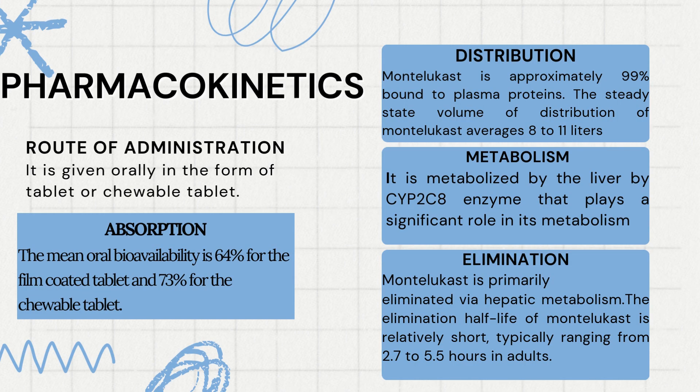Pharmacokinetics — Route of Administration: Montelukast is usually given orally in the form of a tablet or a chewable tablet. Absorption: The mean oral bioavailability for the film-coated tablet is 64% and for the chewable tablet is 73%.